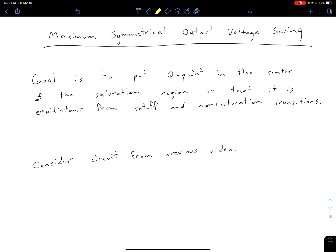We're now going to talk about our maximum symmetrical output voltage swing. And this is basically related to where our Q point is positioned on the load line.